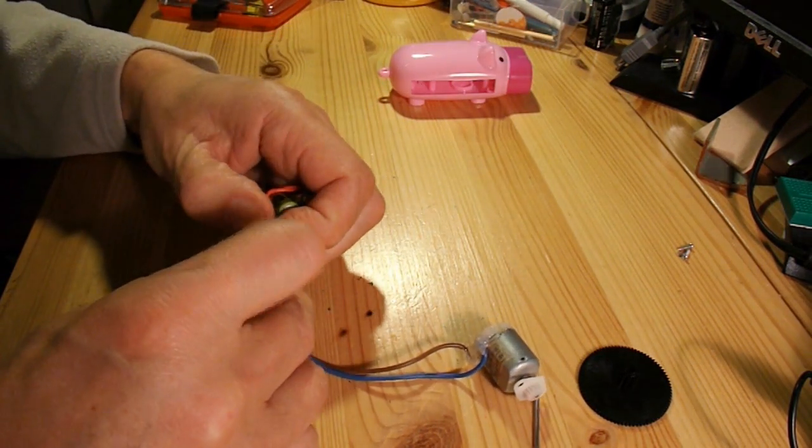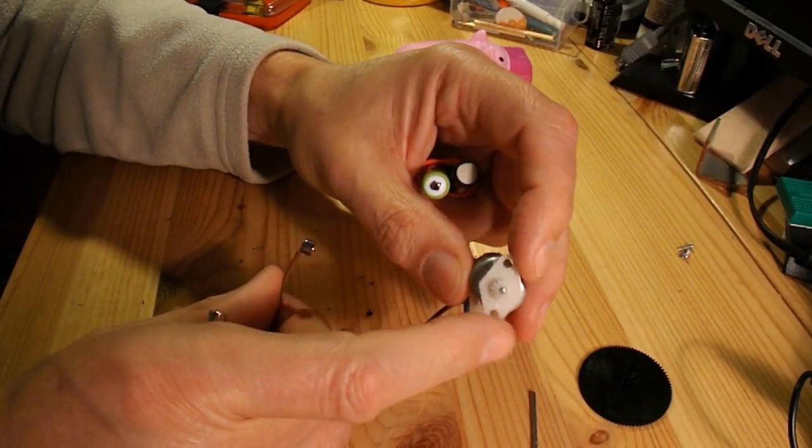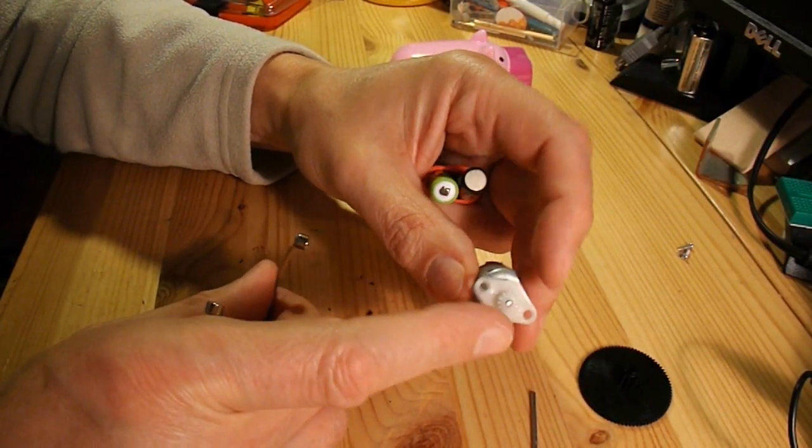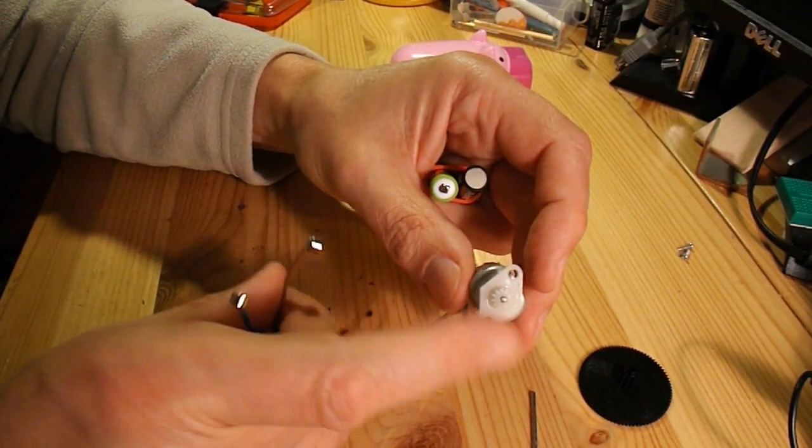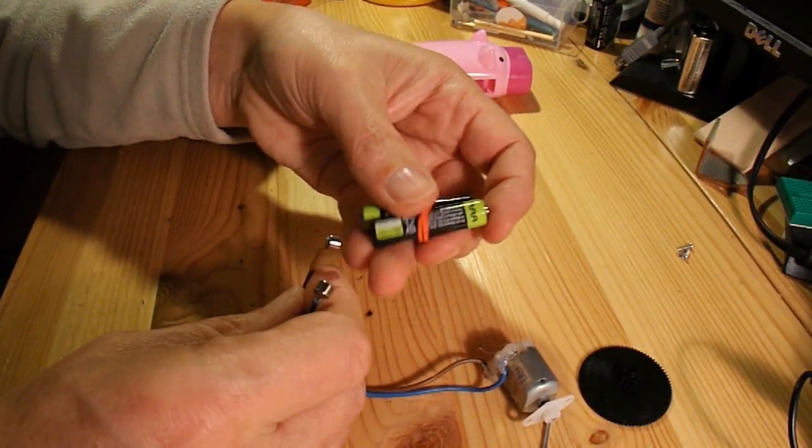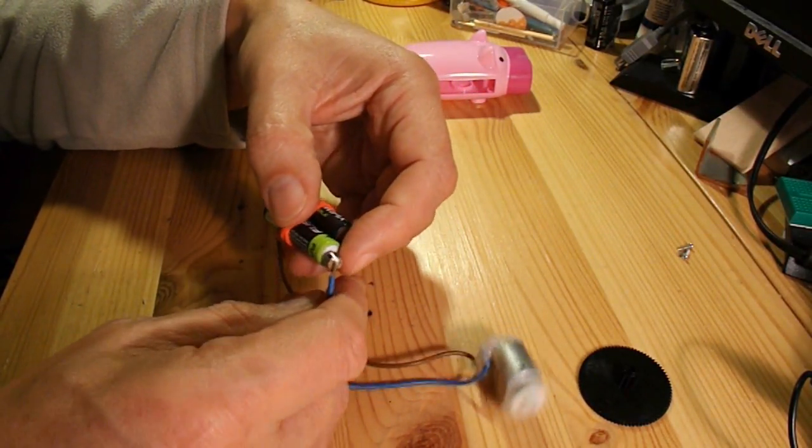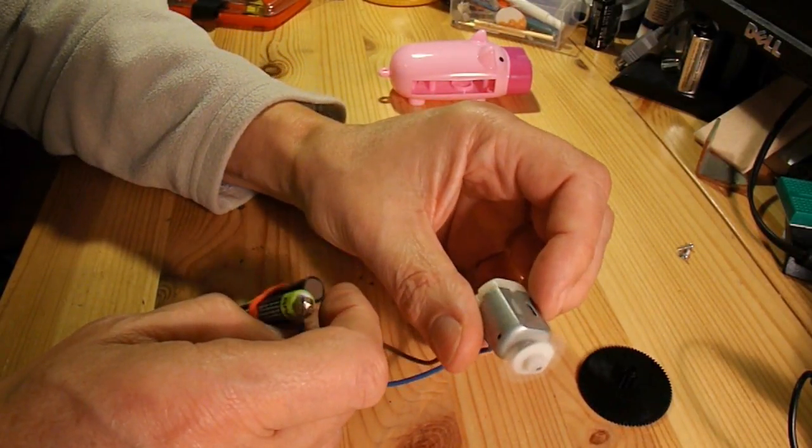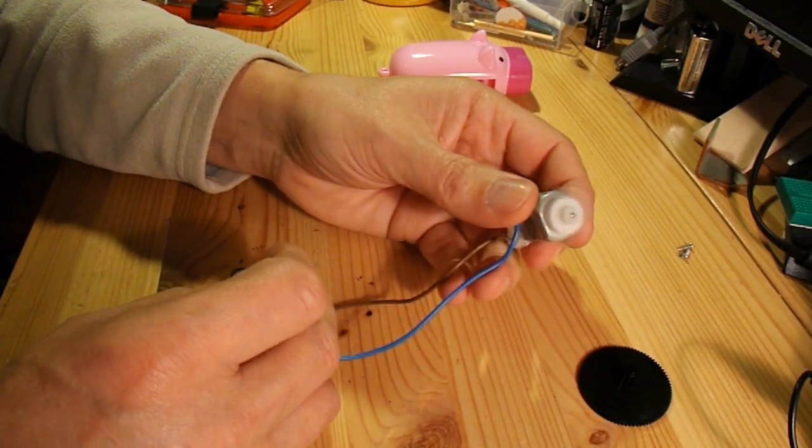And that shaft just happens to be the right size to go on there. Tiny bit... Well, it grips like that, but I think with any pressure it'll probably spin. So I might have to put a bit of hot glue just to make sure it doesn't move. There we go. So that gear works.